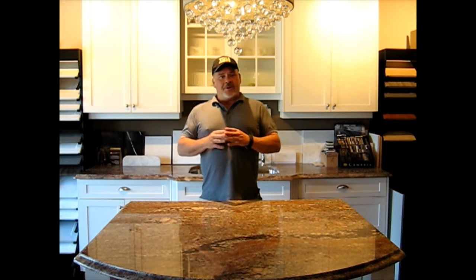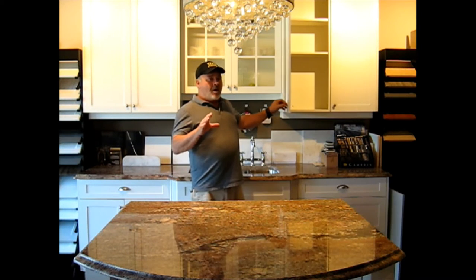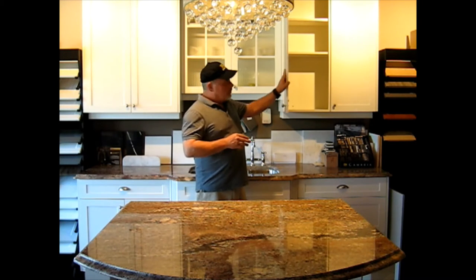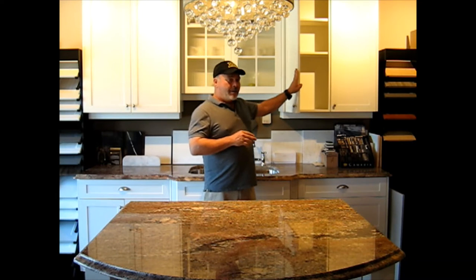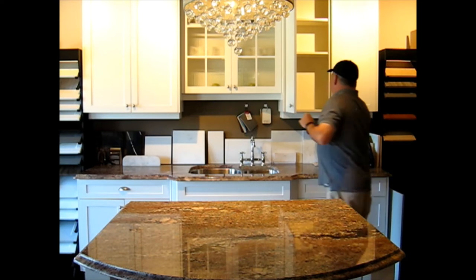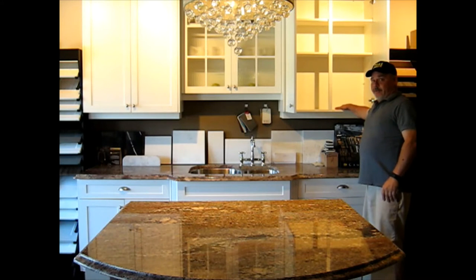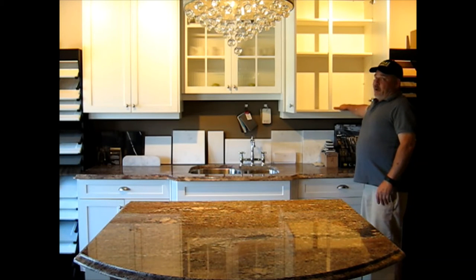Two things that are generally most common when you're going to look at cabinets are one, the fronts or the doors, the kinds of things that are hanging on them. And the other thing is the material that you use to make the cabinet itself, the box. So we're going to start with that.